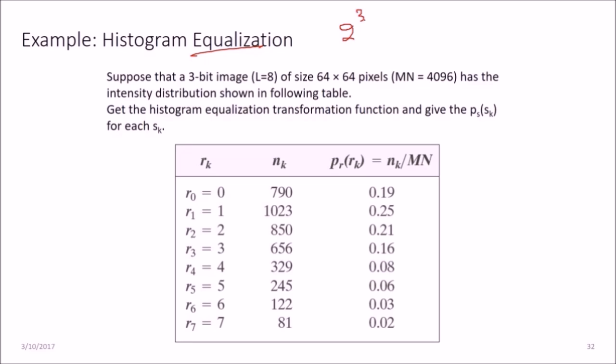3-bit image means 2 to the power 3, that is 8. L is 8 here, we have 8 levels, that means 0 to 7 it can vary, but these are the levels of intensity.